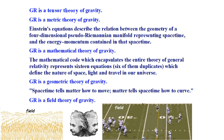It's also a mathematical theory of gravity. The mathematical code which encapsulates the entire theory of general relativity represents 16 equations — six of them duplicates — which define the nature of space, light, and travel in our universe. And it's also a geometric theory of gravity. We have the quotation of John Wheeler: 'Space-time tells matter how to move. Matter tells space-time how to curve.'